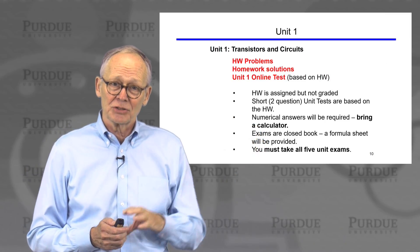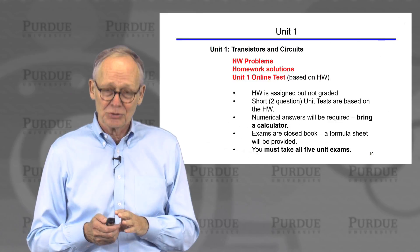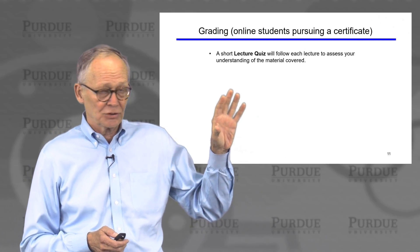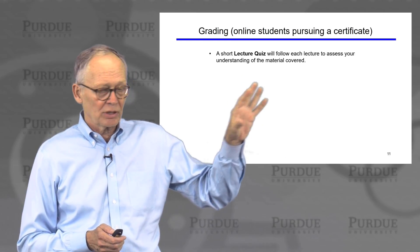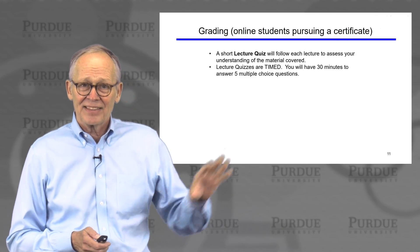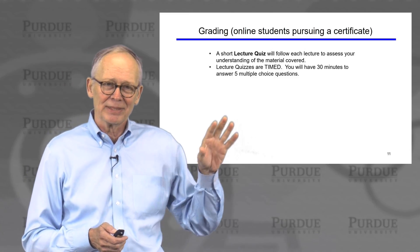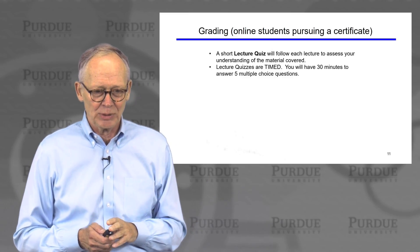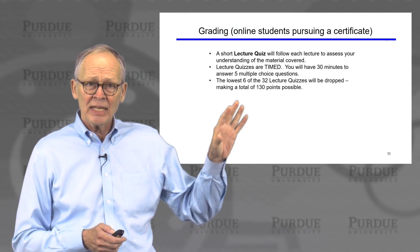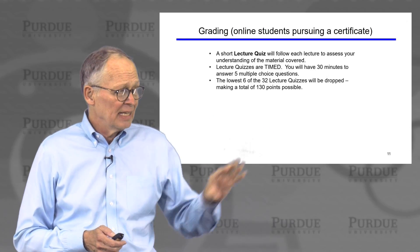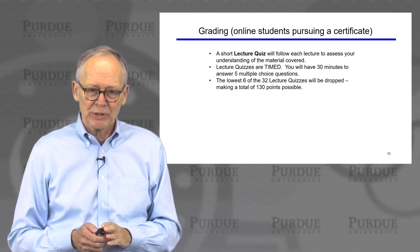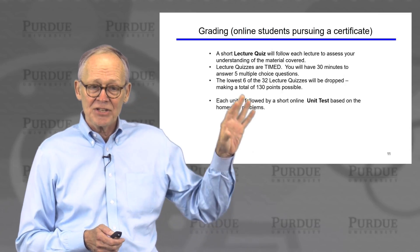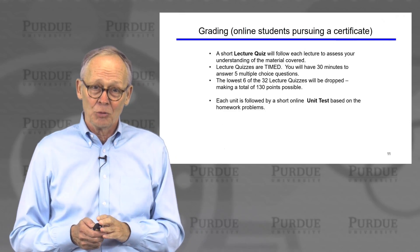There'll be five of those tests. If you're working for a certificate or a grade as a Purdue student, you'll need to take all five. For online students pursuing a certificate, the short lecture quizzes will follow each lecture and should take no more than 10 minutes — you'll have 30 minutes on the platform. There'll be 32 lectures, so 32 lecture quizzes, and your lowest six scores will be dropped, leaving 130 points possible from those quizzes. Each unit is followed by a unit exam based on the homework problems — short, with only two problems, timed at 60 minutes on the platform.